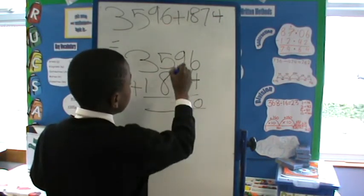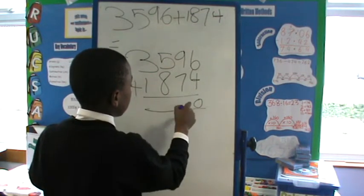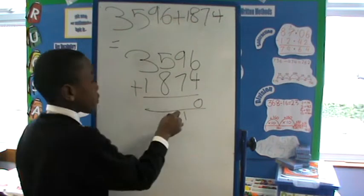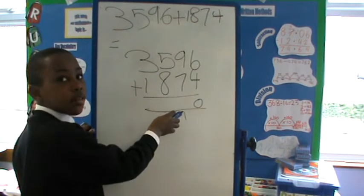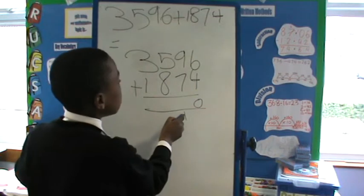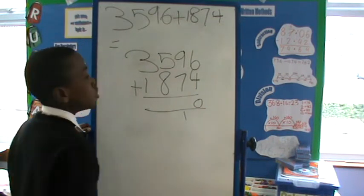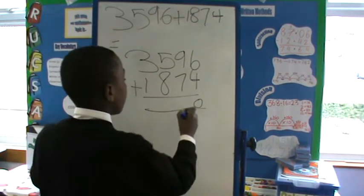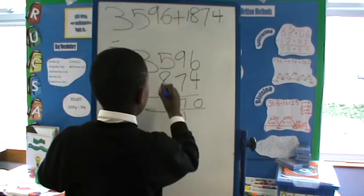And then you have to add the 10 to the next column here. And then you have to add the 1 to the 9 and 7. And that will make 17. And then you have to add the 1 again.